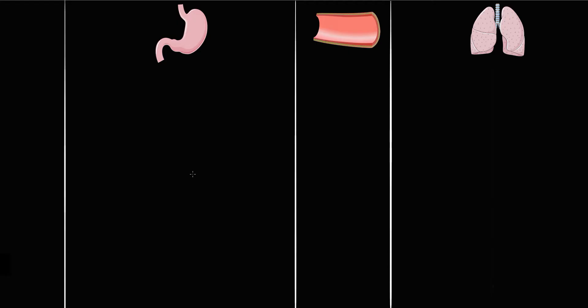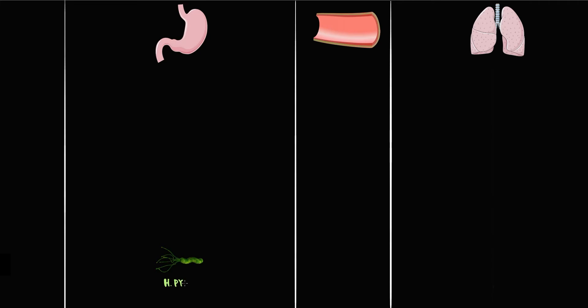To explain this, here we have three major compartments: the stomach, blood, and lungs. In the stomach is located Helicobacter pylori, and as we know, Helicobacter pylori has a specific enzyme called urease.